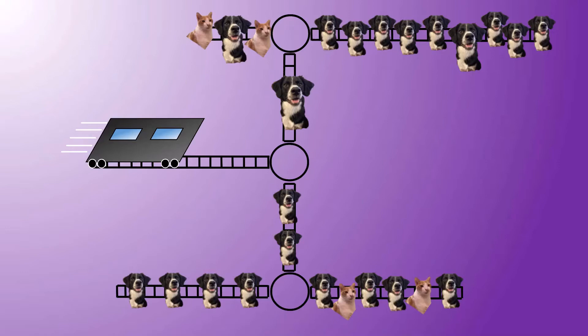Fortunately, there is something they can do about the situation. A dog controls the north-south switch station, meaning that he can choose which of those two directions the trolley will ultimately go.